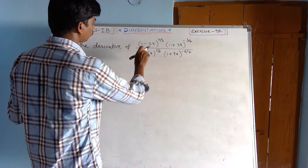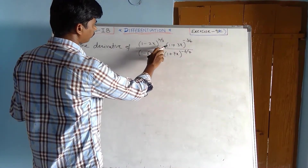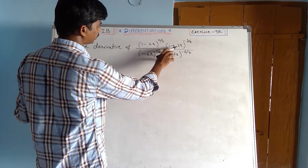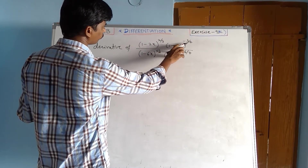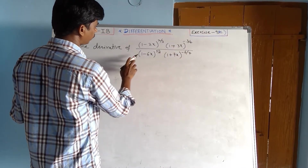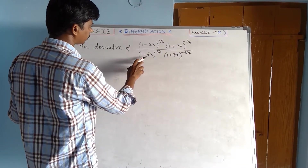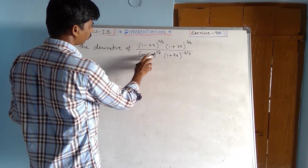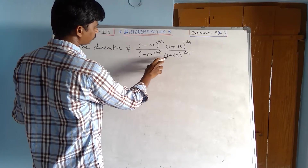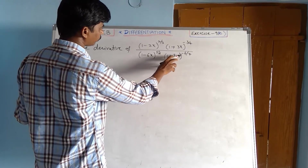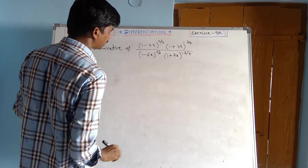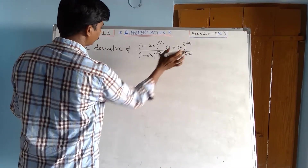Find the derivative of (1 minus 2x) to the power of 2/3, times (1 plus 3x) to the power of minus 3/4, divided by (1 minus 6x) to the power of 5/6, times (1 plus 7x) to the power of minus 6/7.